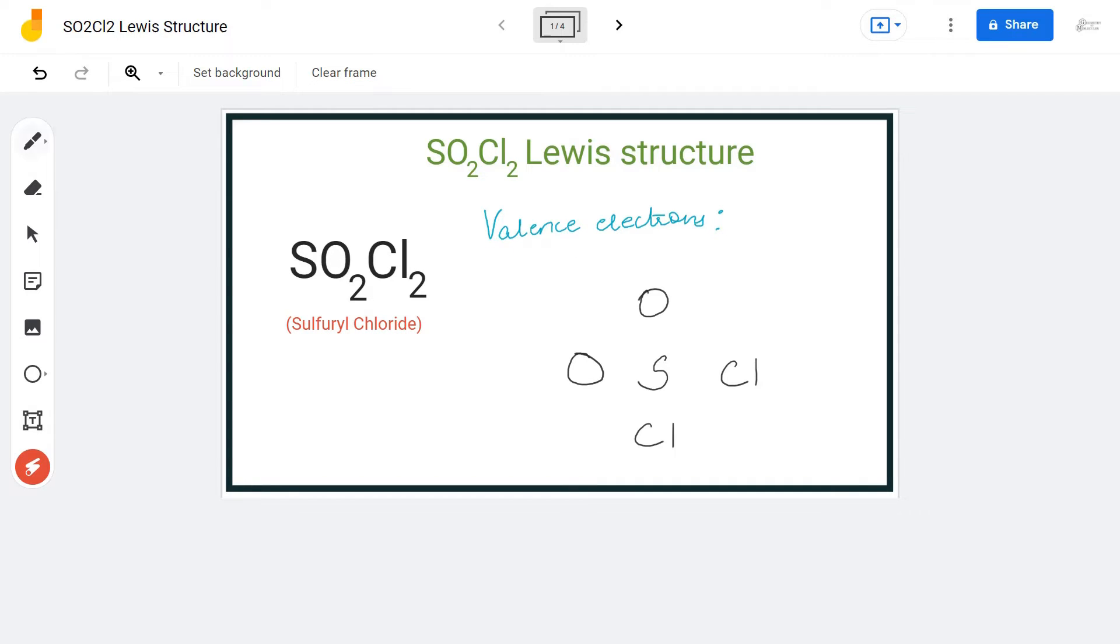Here we have one sulfur atom, two oxygen atoms, and two chlorine atoms. Sulfur atom has six valence electrons in its outer shell. Each oxygen atom has six valence electrons in its outer shell.